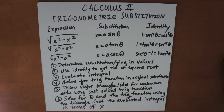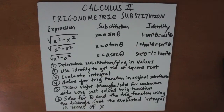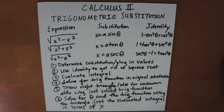So now let's talk about how to approach these types of problems. You first determine the substitution and plug in the values in the integral. You then use the identity to get rid of the square root. You then evaluate the integral just like you would evaluate any other integral.